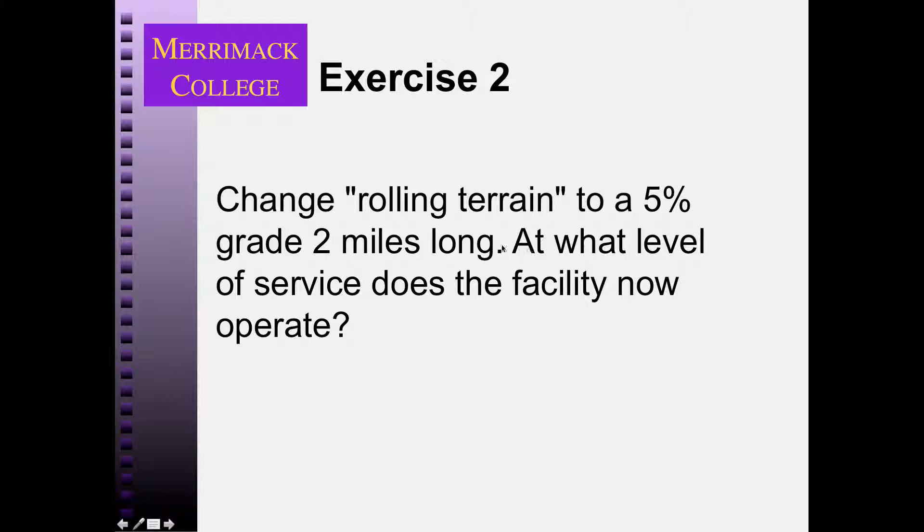So in our previous example, we used rolling terrain, which is kind of a loosey-goosey, very general definition of the profile along the road. And now we have specific information about that profile. It's a 5% grade, two miles long. So at what level of service does the facility operate?